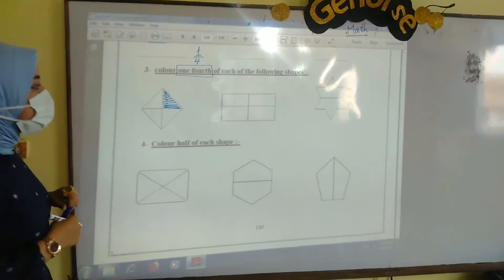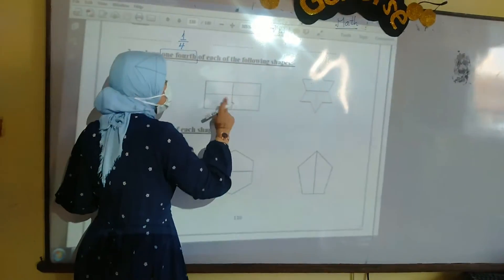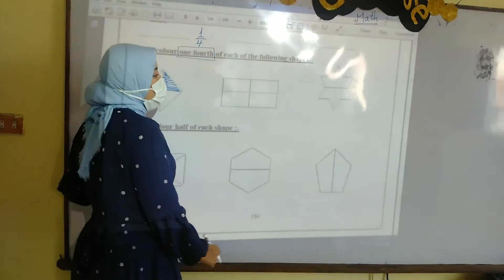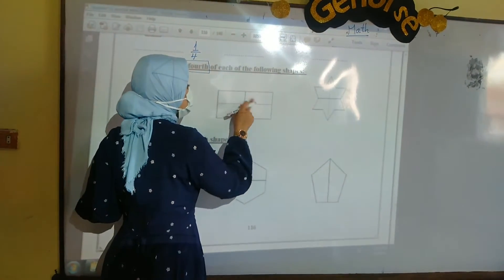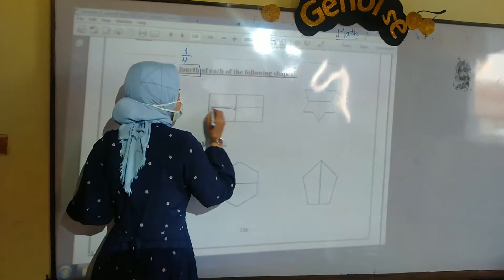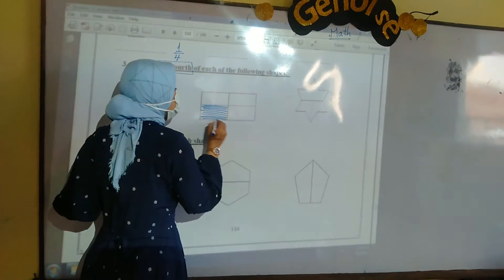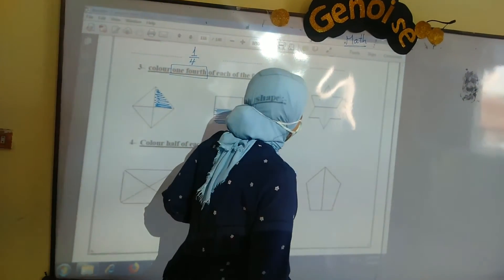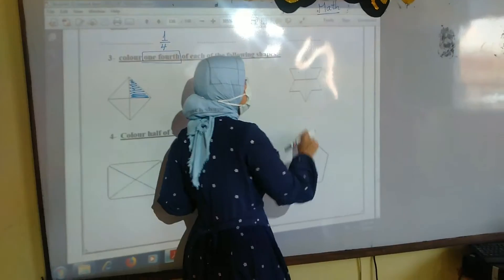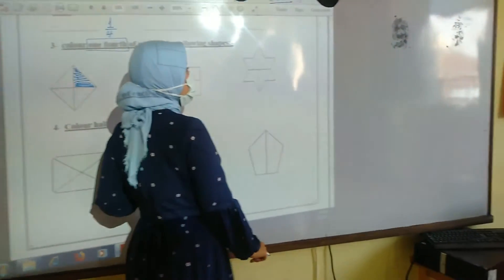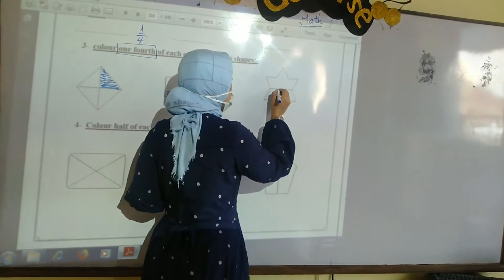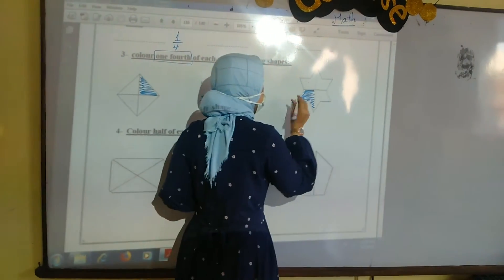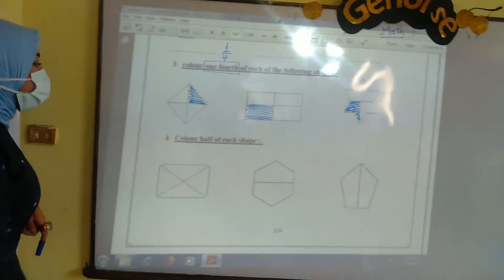The second shape is divided into 4 equal parts. You want to color 1 fourth or 1 quarter of this shape, so you can choose just 1 part from this shape, like this. It represents 1 fourth or quarter. So you can choose just 1 part to color it. It represents 1 fourth.